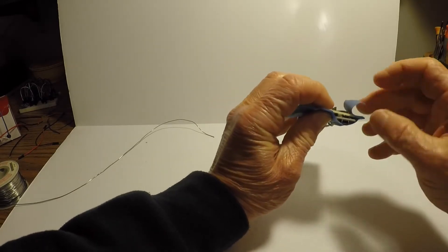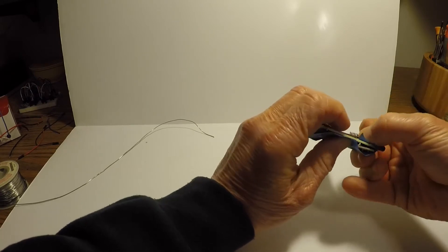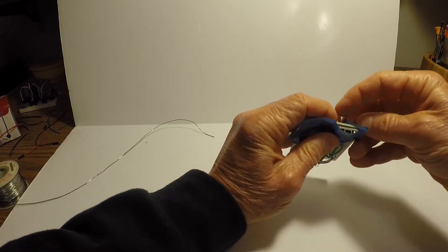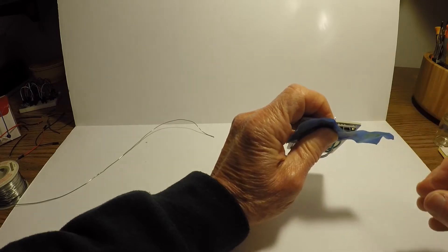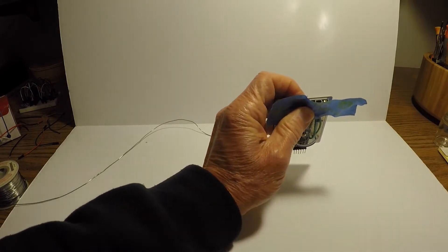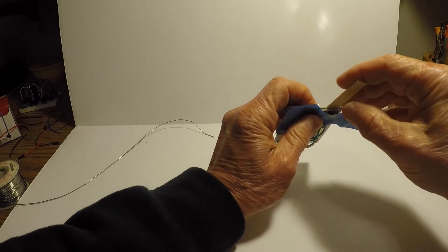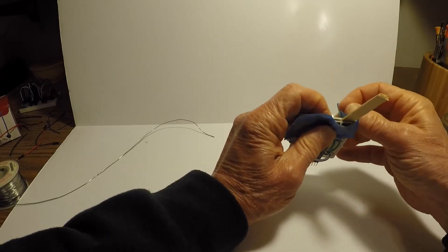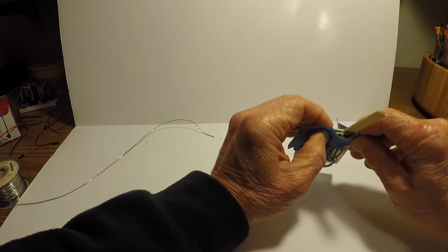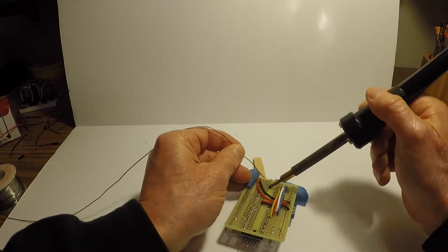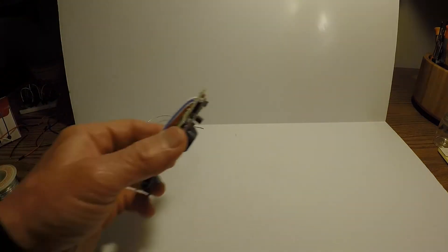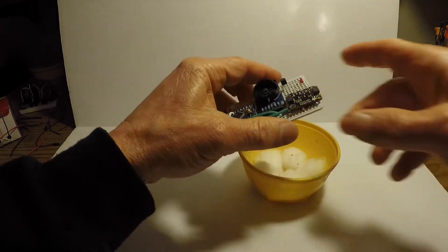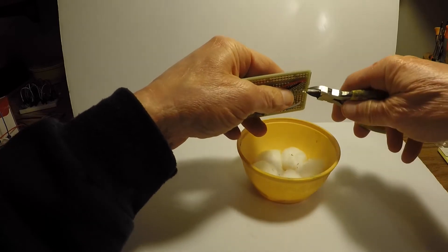I tape it down and put a popsicle stick spacer underneath so the board sits square. After soldering and inspecting it, that looks good. As before, I snip off the extra length of pins.